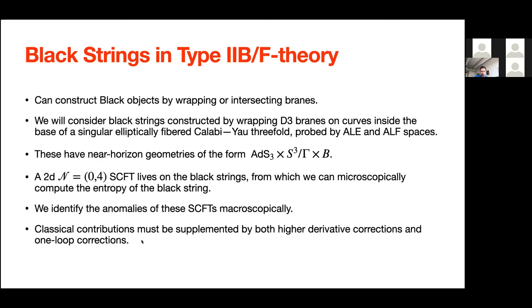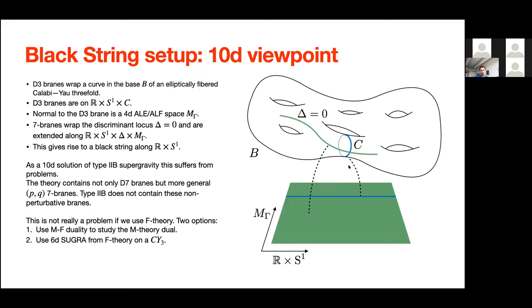This is the 10D setup: we have the base of a Calabi-Yau threefold, a curve inside this base which the D3 brane wraps, and the D3 brane wrapping R times S1, probed by the M_gamma space. On top of this we insert 7-branes, which can in principle be non-trivial stacks of (p,q) 7-branes depending on the singularities of the Calabi-Yau threefold. Strictly as a 10D solution in type IIB this is problematic because you also need non-perturbative (p,q) branes, so we use M-F duality or alternatively look at a 6D supergravity theory obtained from F-theory on Calabi-Yau threefolds.